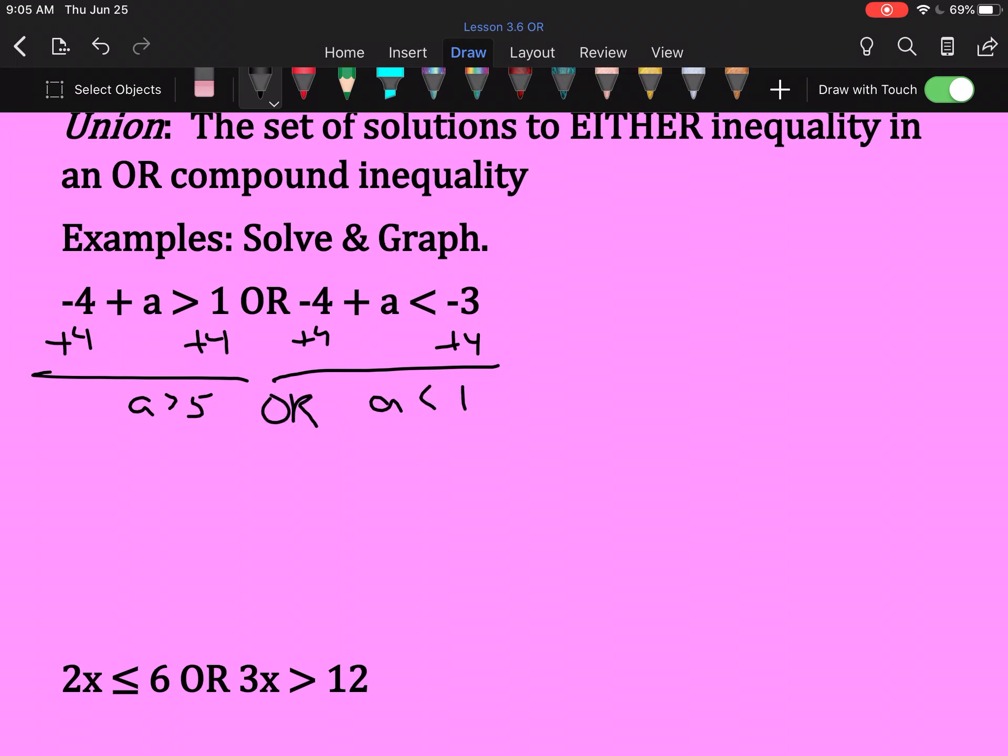And this is OR. A is greater than 5, OR a is less than 1. Now that means either of those can be true. It doesn't matter which.